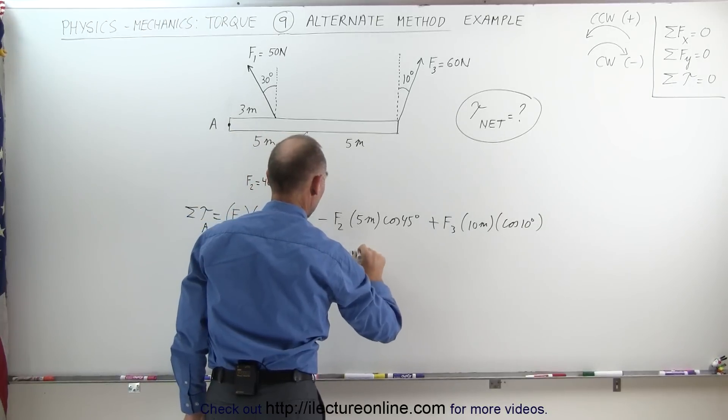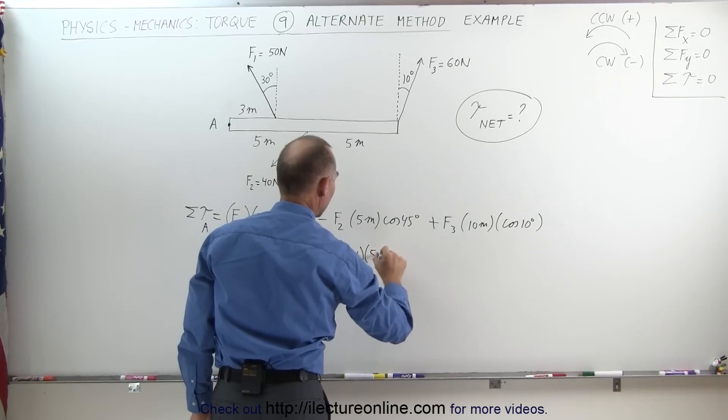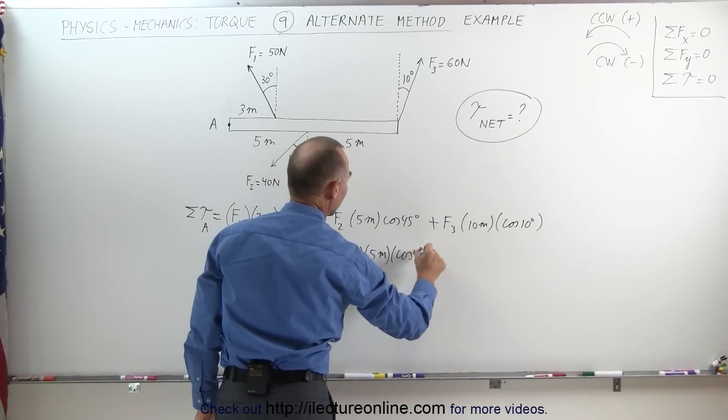Minus the second force, that's 40 newtons, times the distance of 5 meters, times the cosine of 45 degrees.